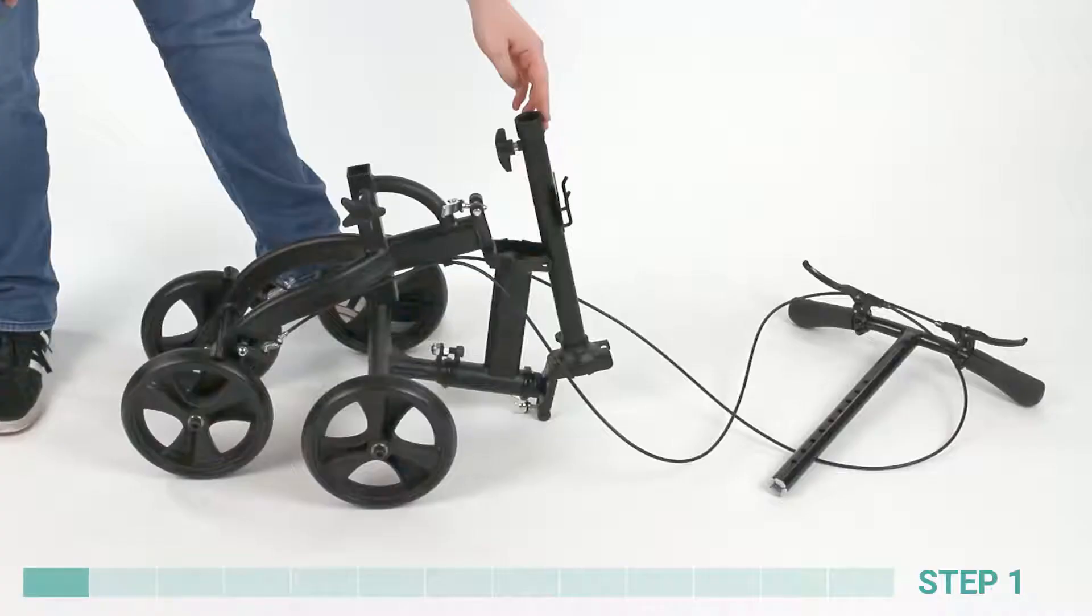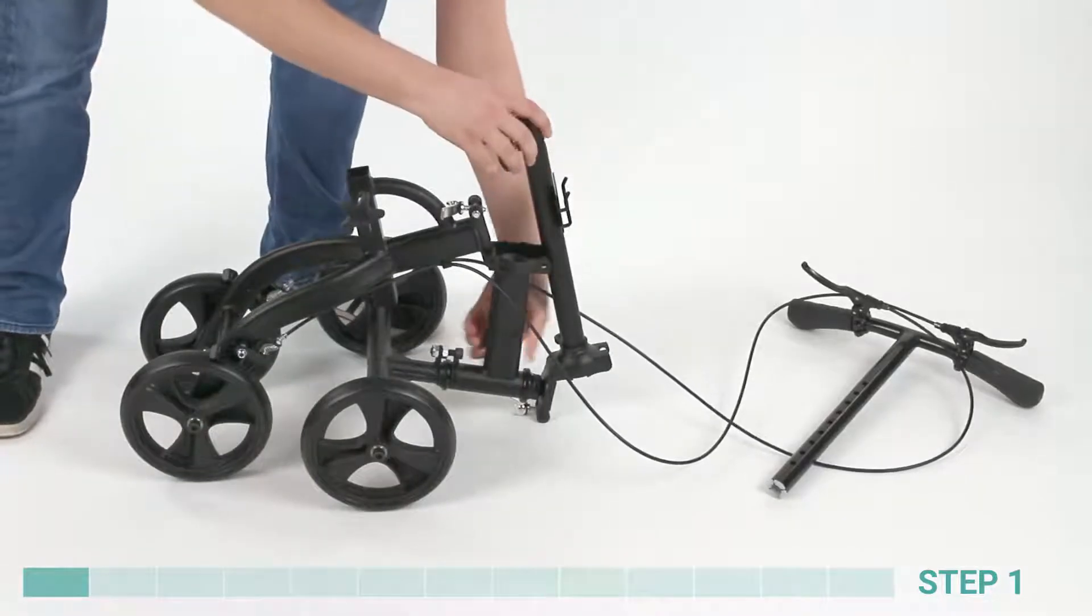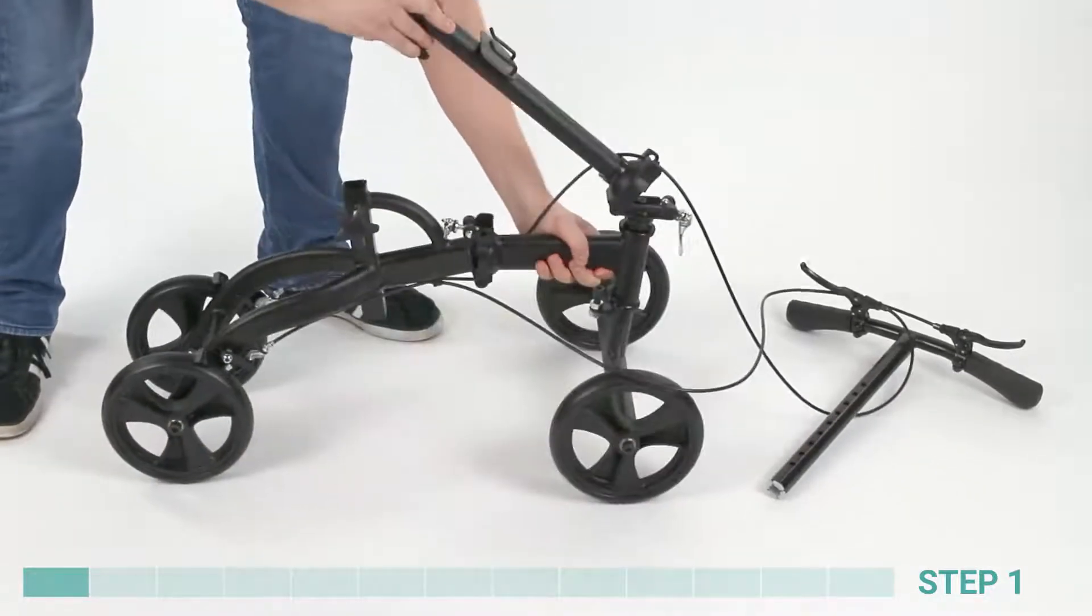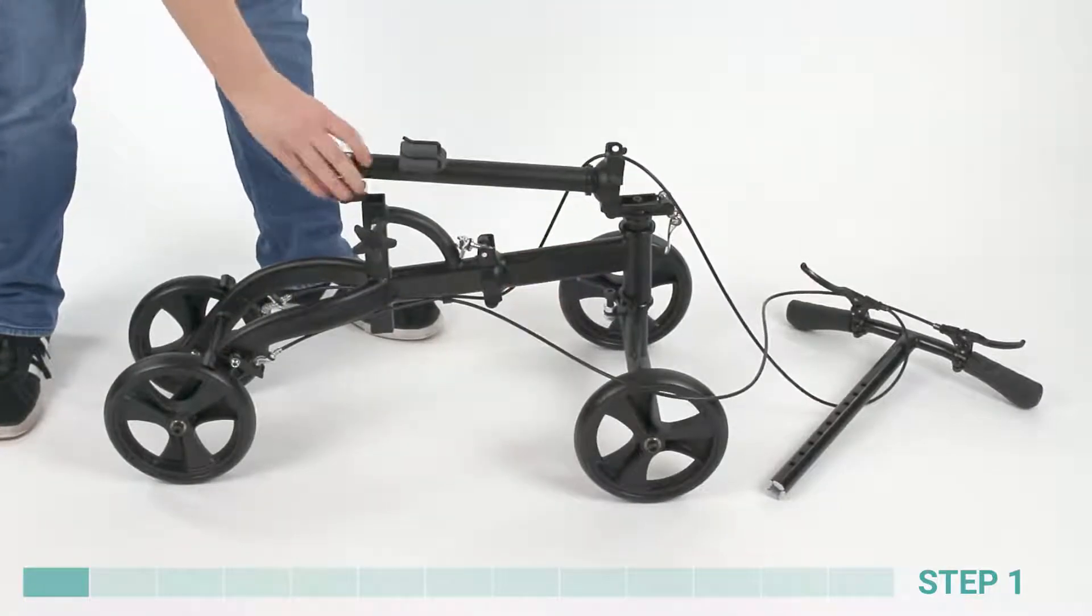Step 1. With rear wheels on the ground, lift the front axle forward until the folding joint between the front and rear axles locks into place.